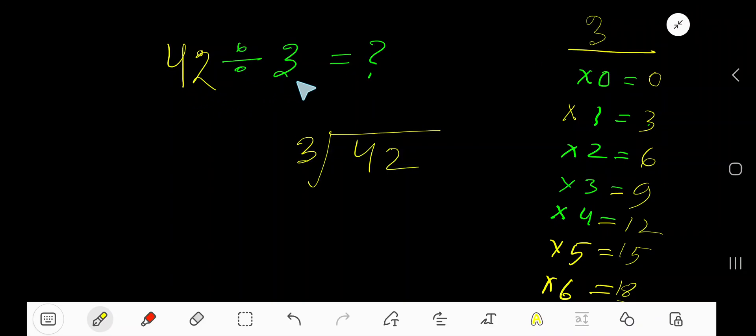42 divided by 3. Here 3 is the divisor, so we need the multiplication table of 3. 3 times 0 is 0, 3 times 1 is 3, 3 times 2 is 6, 3 times 3 is 9, 3 times 4 is 12.